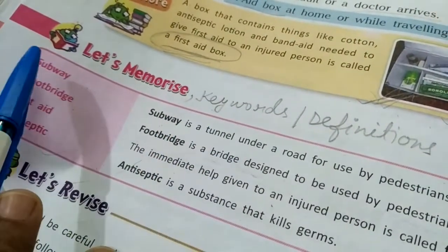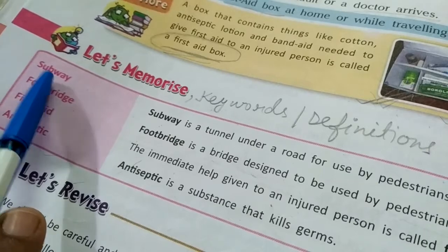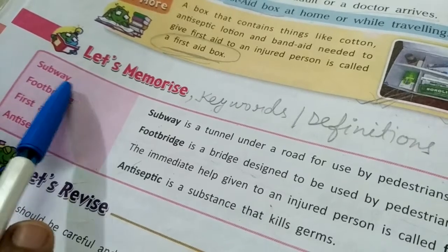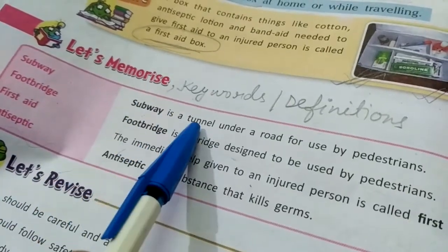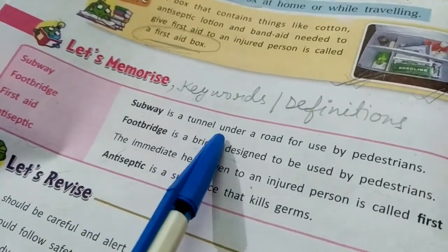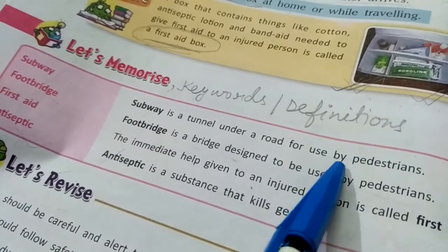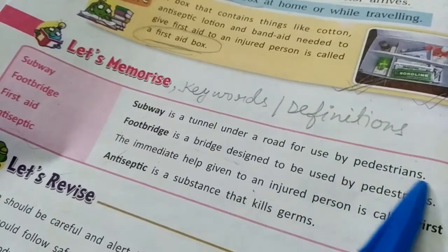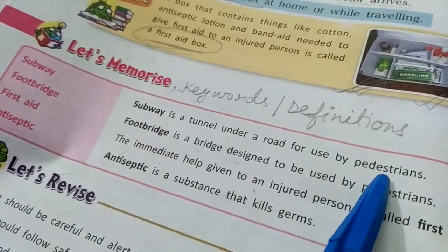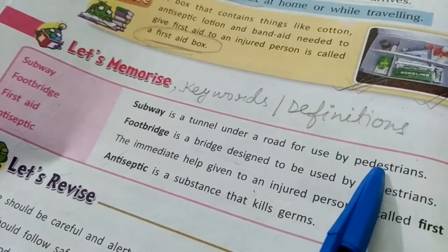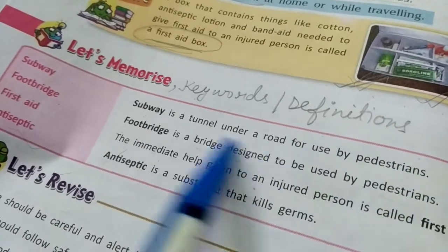The first keyword is subway. Subway is a tunnel under a road for use by pedestrians — pedestrians meaning people who walk on foot.